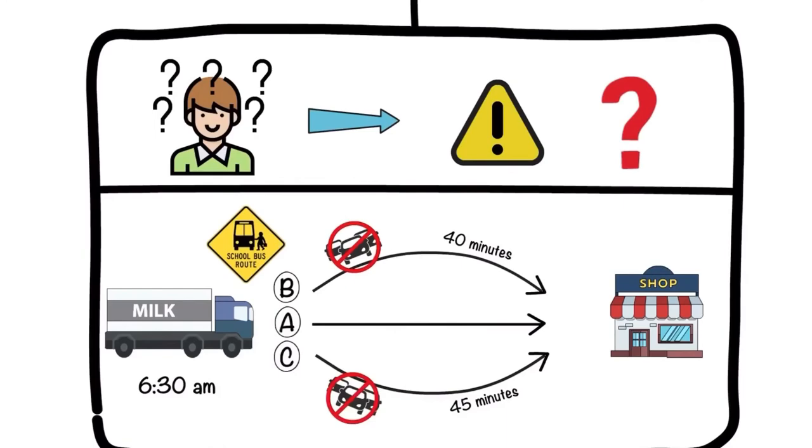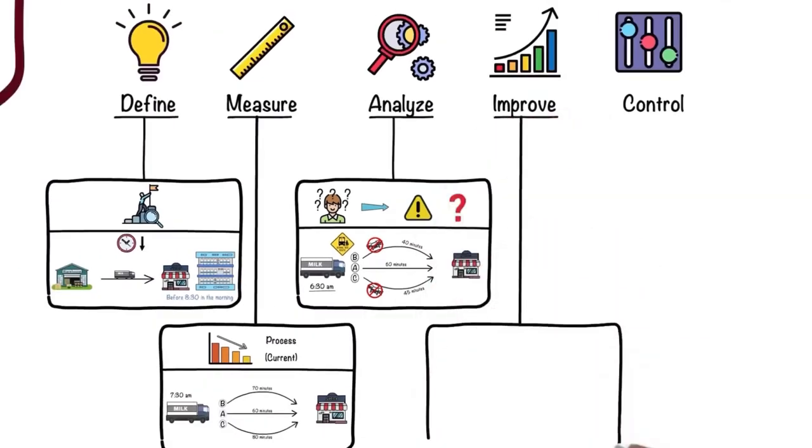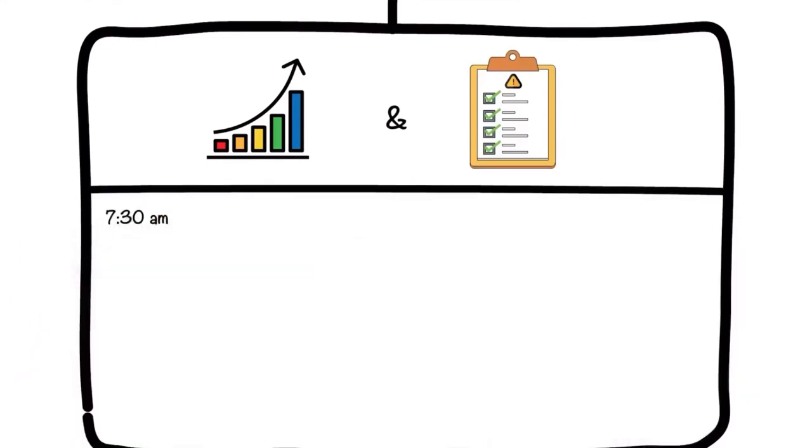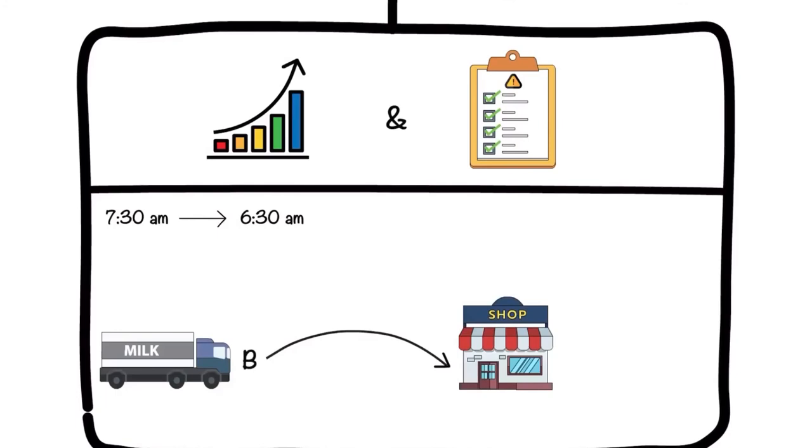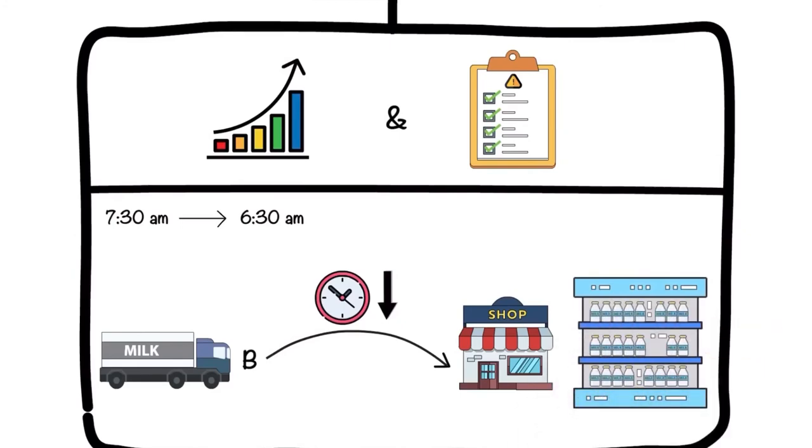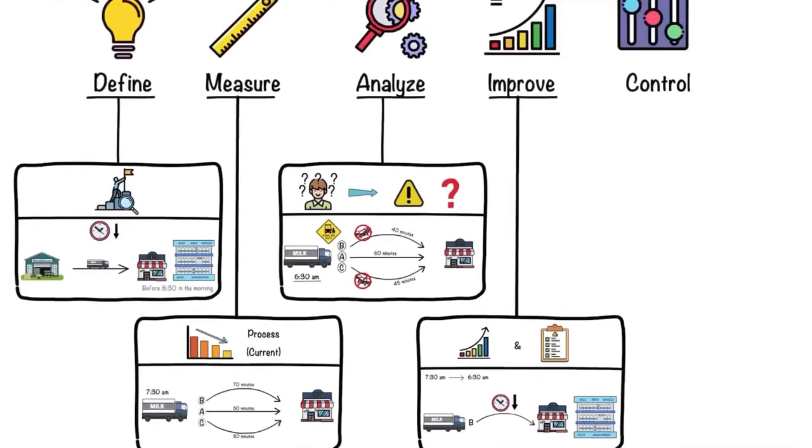Route A still takes the milk truck one hour to get to the supermarket, even when the truck leaves at 6:30 a.m. In the Improve phase, performance can be improved by addressing and eliminating the root causes. Now that you've realized that advancing the milk pickup by an hour and changing the route to Route B can save time, you change the process accordingly, providing your workers with ample time to stock the milk into the shelves before the morning rush.